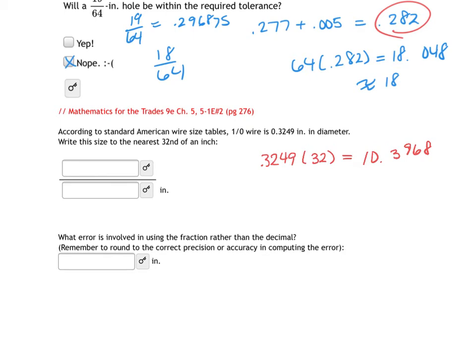Now this is closer to 10 than it is 11. So 10 over 32 is approximately equal to the 0.3249. Now it's not going to be exact because I did a rounding here. So 10 over 32 is approximately equal to 0.3249. So this actually reduces by a factor of 2. So that's 5 here and 16 there. So 5/16ths.